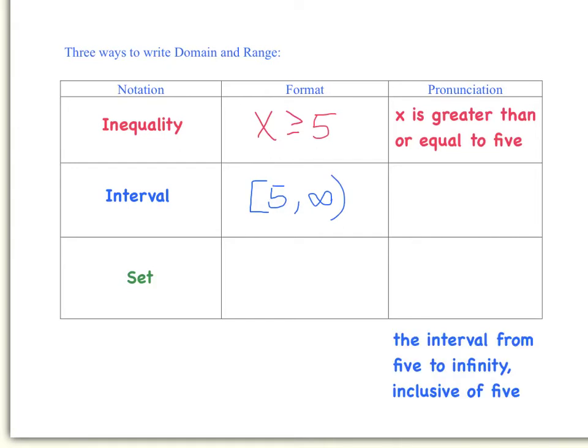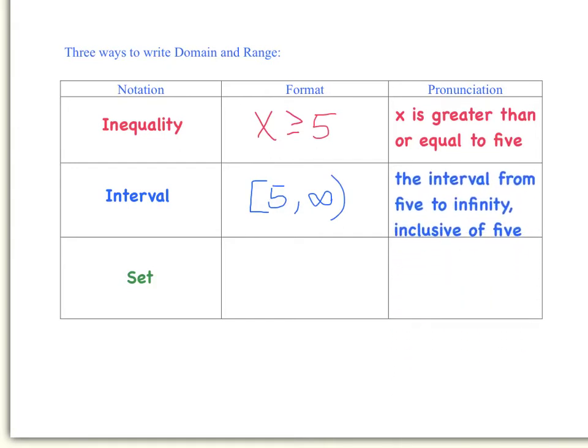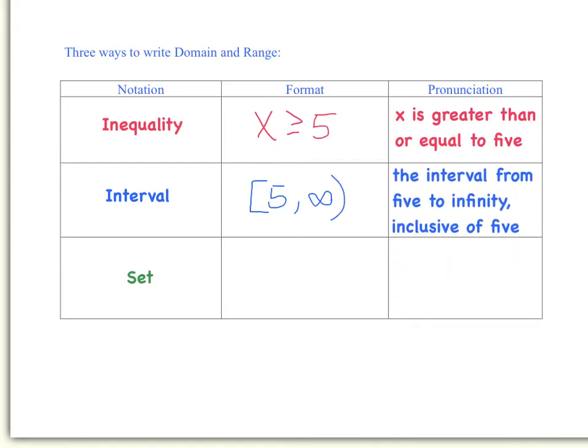The format using interval notation would be just a little different, and it would be pronounced like this: 'The interval from 5 to infinity, inclusive of 5.' Interval notation can be easier to write, but sometimes more lengthy to say.